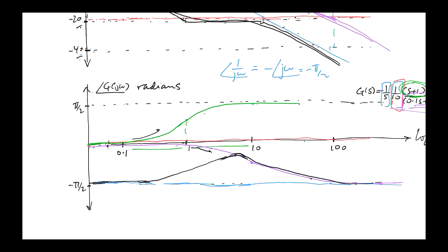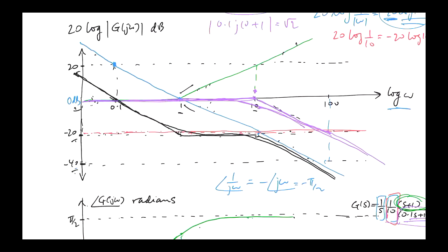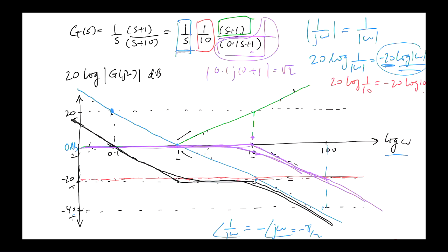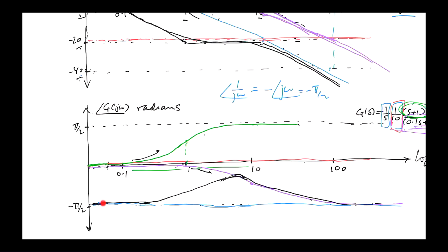When I was drawing the phase part of the Bode plot for this example, I drew the phase coming down a bit too early. You can see that at about this point here you're getting plus pi on 2 and minus pi on 2 — they cancel each other out — so it should already be hitting the purple line at about this frequency and then just following down. I just wanted to correct that. We had the MATLAB-generated Bode plot anyway for reference.